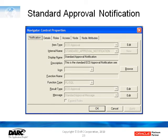Here are the notification properties. If we focus on the function name field, we'll see that it's blank, and therefore there is no voting method set up here. We'll then take a look at the message.